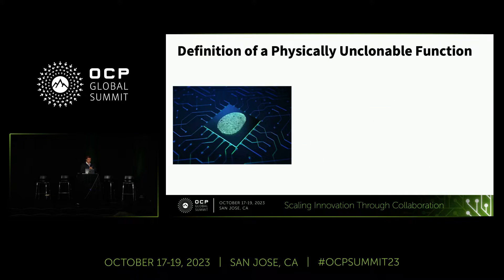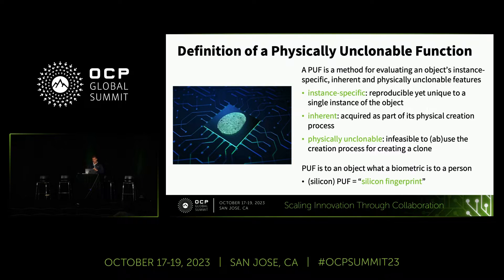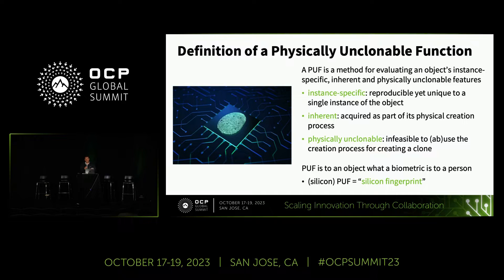So what is a PUF, or a physical unclonable function — not a 'physically unclonable function,' but a 'physical unclonable function,' which is a slightly different thing. The best way to think about it is that it is the biometric of a chip. Chips are physically unique due to deep sub-micron process variations, and you can extract that uniqueness reliably to get your unique device secret.